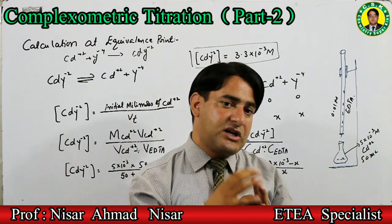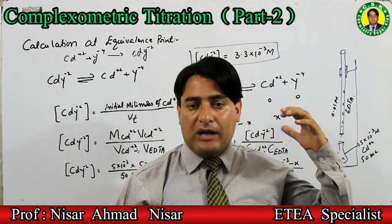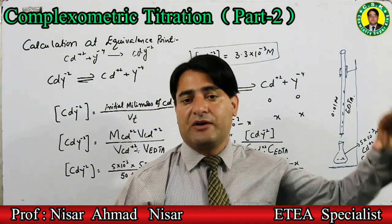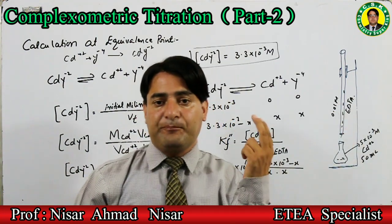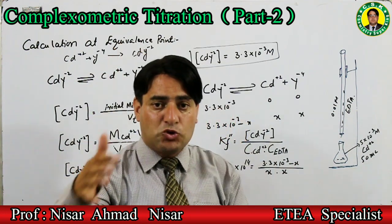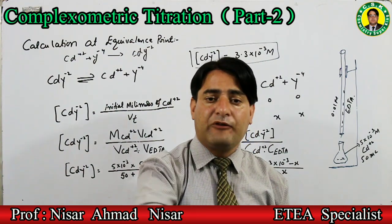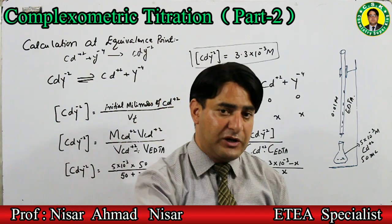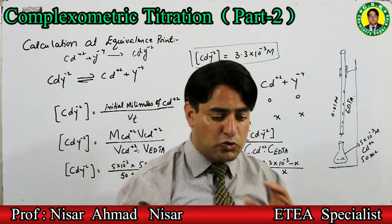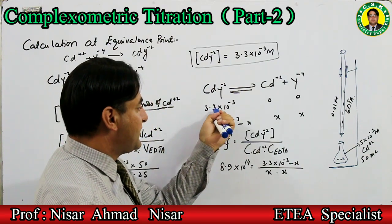Complex کی concentration کو ہم use کر کے extent of dissociation of complex find کریں گے۔ Complex کی concentration اور conditional formation constant of complex (Kf'') کو use کر کے ہم extent of dissociation find کریں گے، پھر concentration of cadmium ion جو complex کی dissociation سے بنے گی وہ find کریں گے۔ Complex کی concentration ہے 3.3×10⁻³ molar۔